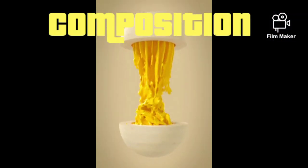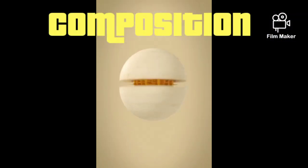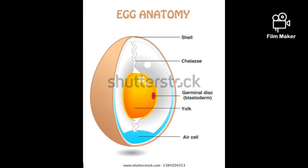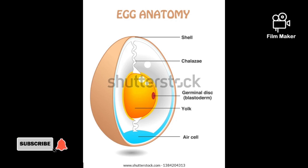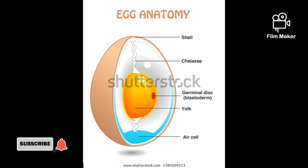Now let's look over the composition of the egg. A whole egg is made up of yolk, white, and shell. A membrane lines the shell and forms an air cell at the large end of the shell. The yolk is centered in the shell by the chalazae — two white strands that are visible when the egg is broken.